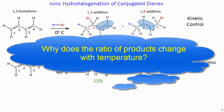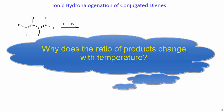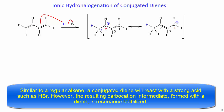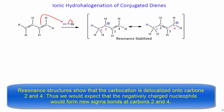Let's examine why the ratio of products changes with temperature. Similar to a regular alkene, a conjugated diene will react with a strong acid such as HBr. However, the resulting carbocation intermediate formed with a diene is resonance-stabilized. Resonance structures show that the carbocation is delocalized onto carbons 2 and 4. Thus, we would expect the negatively charged nucleophile to form new sigma bonds at carbons 2 and 4.